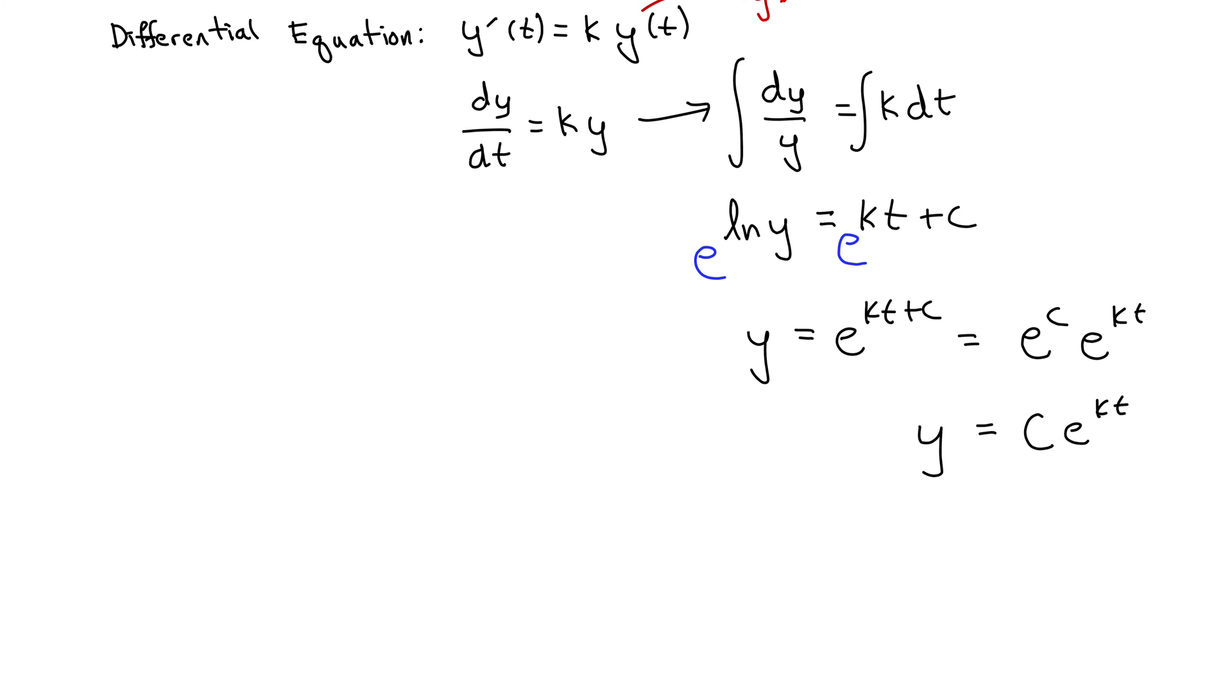But we have an initial condition. y of 0, y at time 0, equals, well, we don't know what it is, but it's some y0. So plugging those two values in here, we have y0 goes in for y, 0 goes in for time. That gives us, go over here to the left-hand side with it, y0 equals c e to the 0, which is just c. So then c must equal y0, which gives us our final equation: y equals y0 e to the kt.